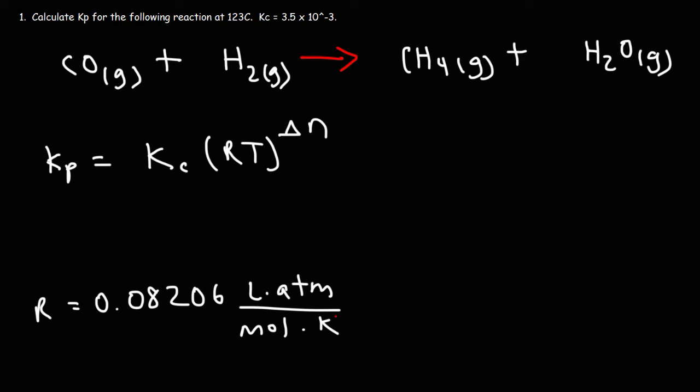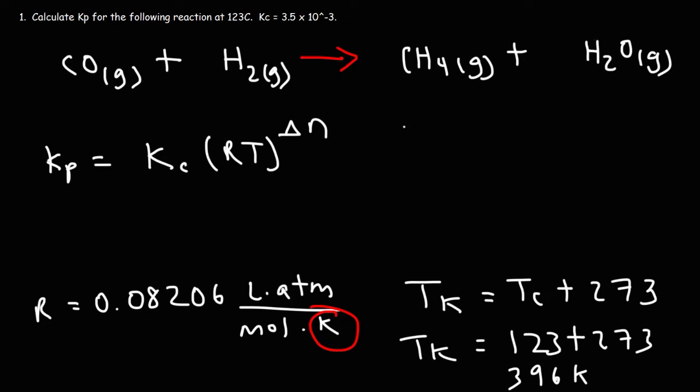Note that the unit of temperature is in Kelvin. Right now, we have the temperature in Celsius, so we need to convert it to Kelvin. The Kelvin temperature is equal to the Celsius temperature plus 273. So we need to add 123 and 273, and that is going to be 396 Kelvin. So that's our T value in this problem.